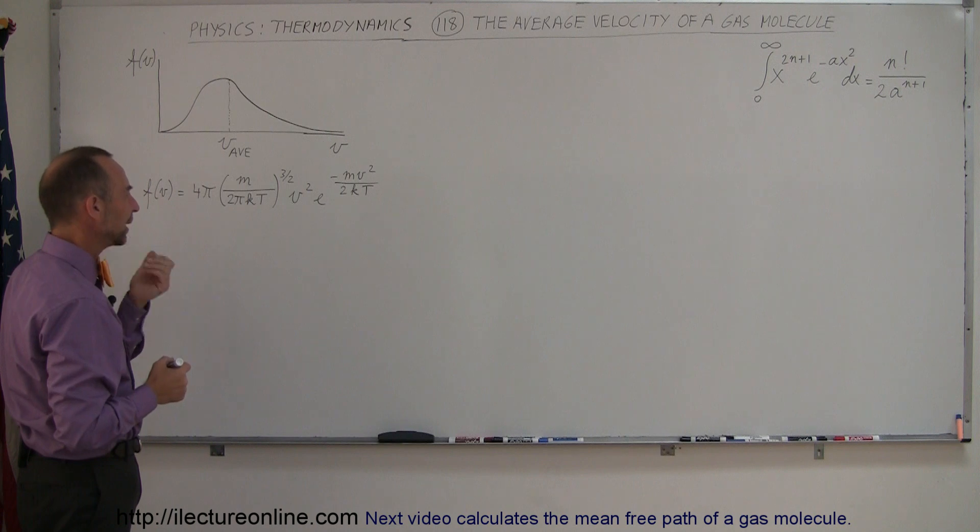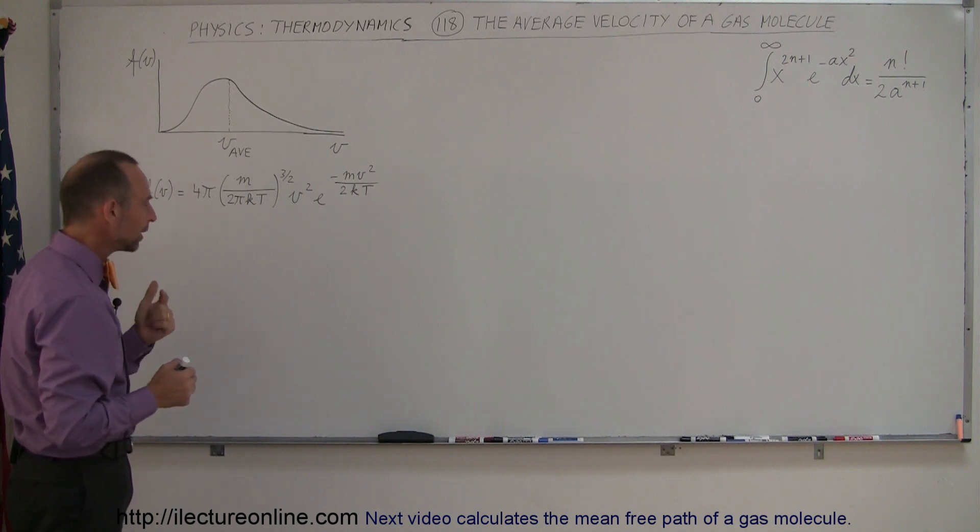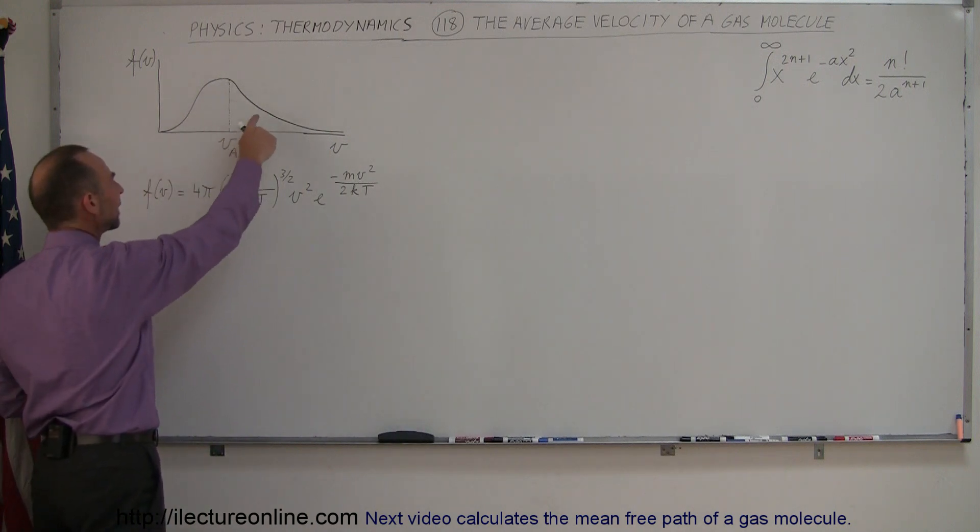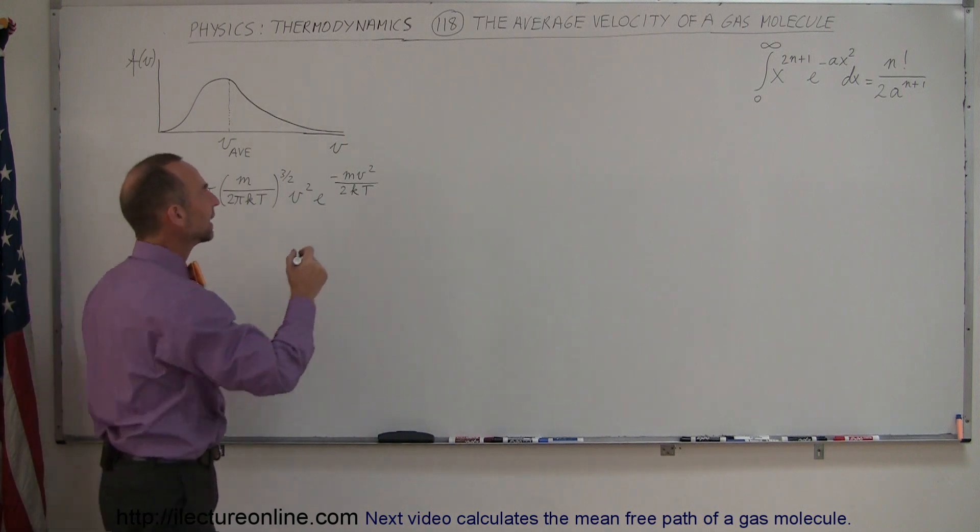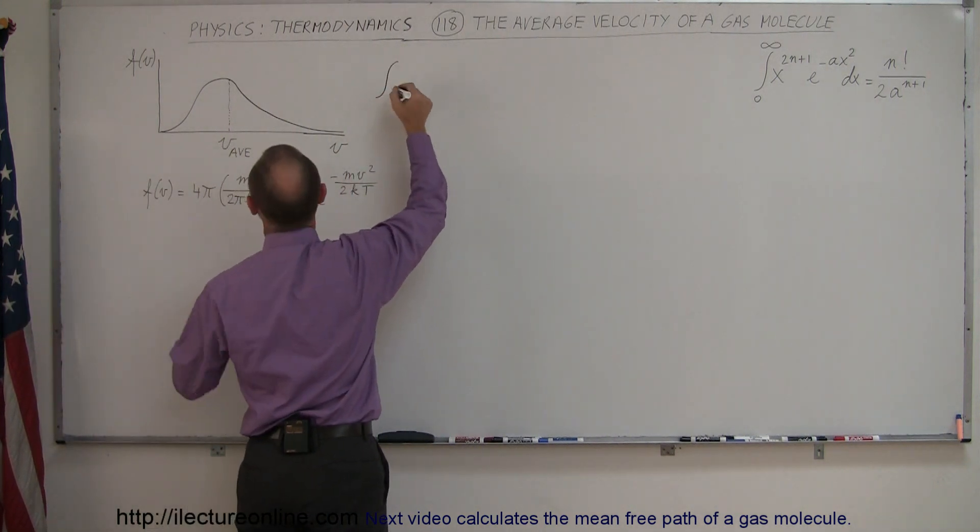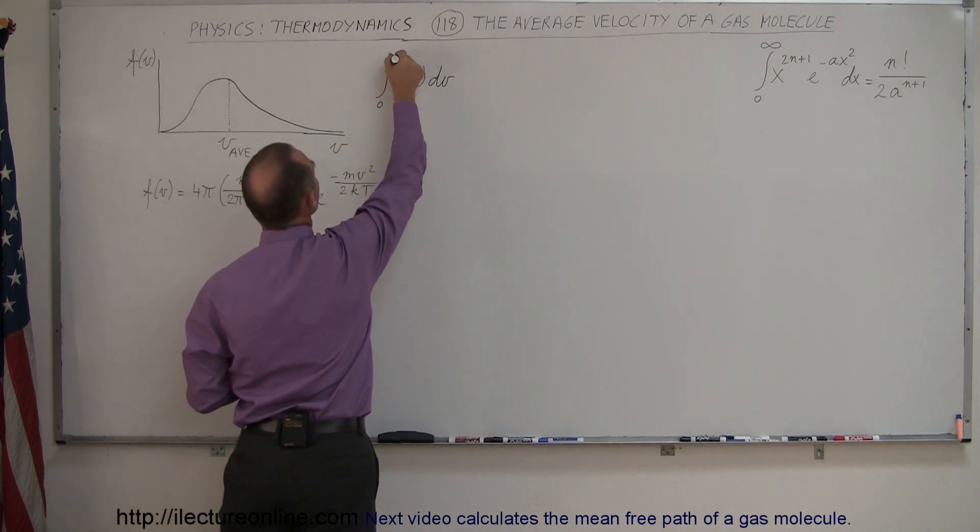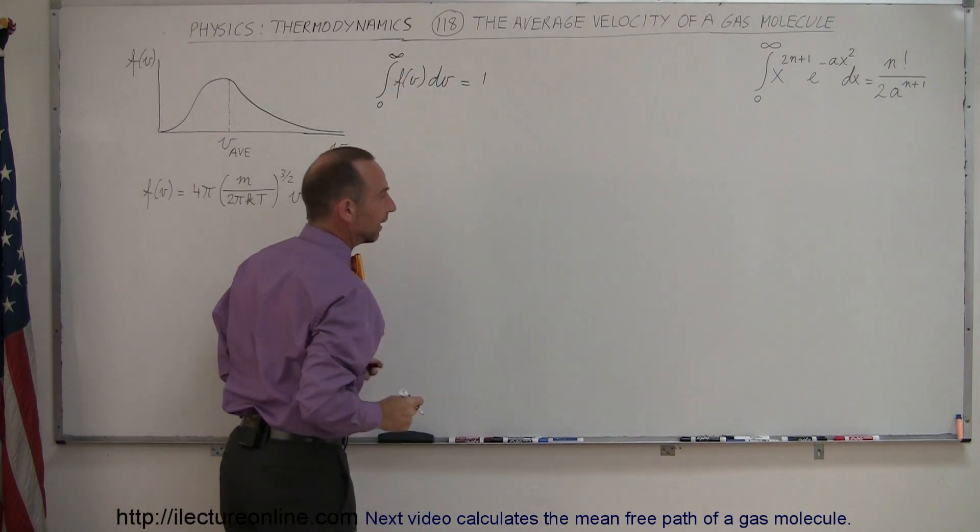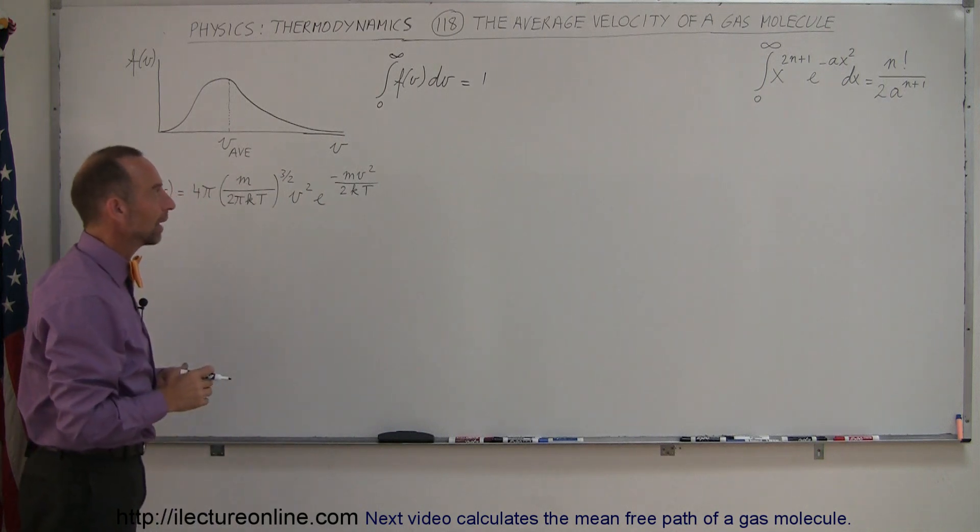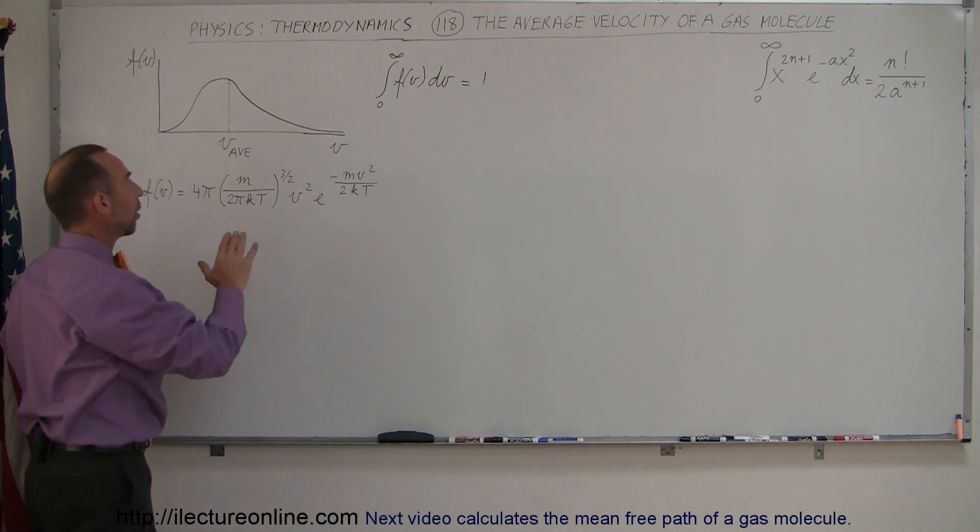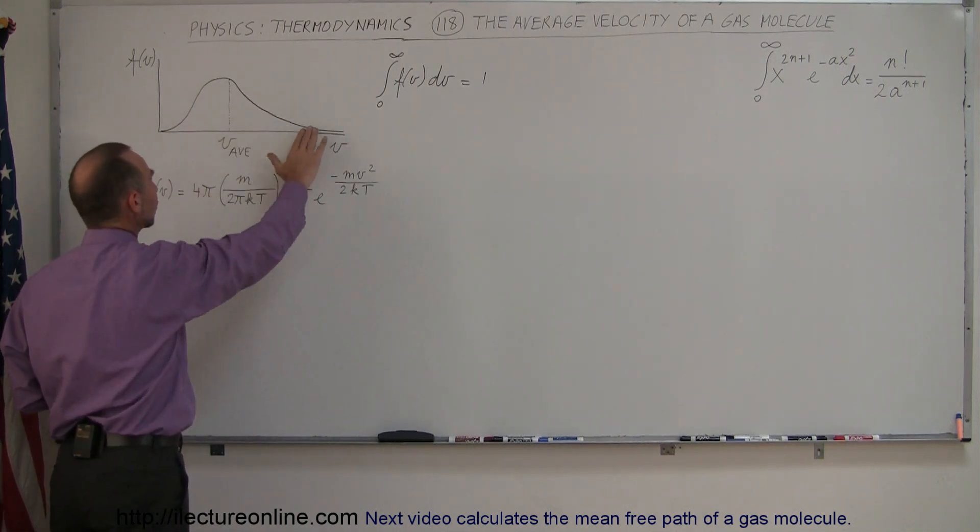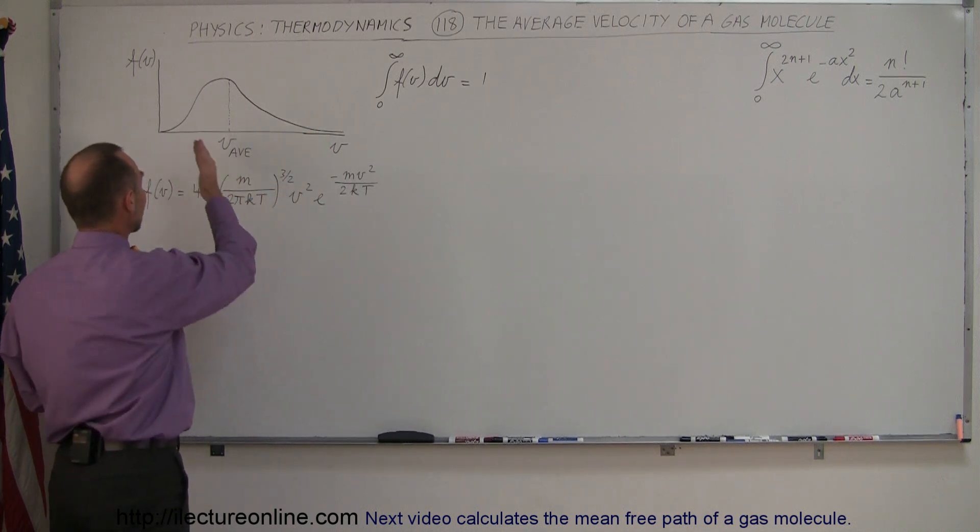How do we figure that out? What we have to realize is that this is kind of like a probability function, and if we take the integral of that function and integrate it from 0 to infinity, we should get 1. That's because it is then normalized, so the probability that all the molecules will be underneath this curve is equal to 1 when you go from 0 to infinity.